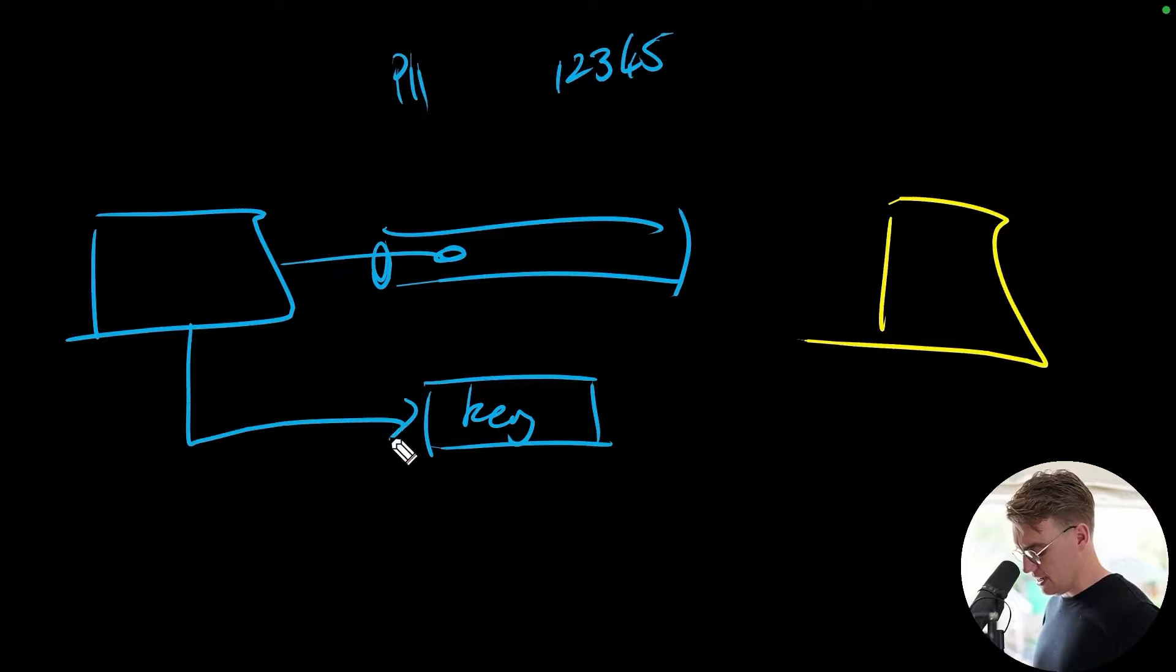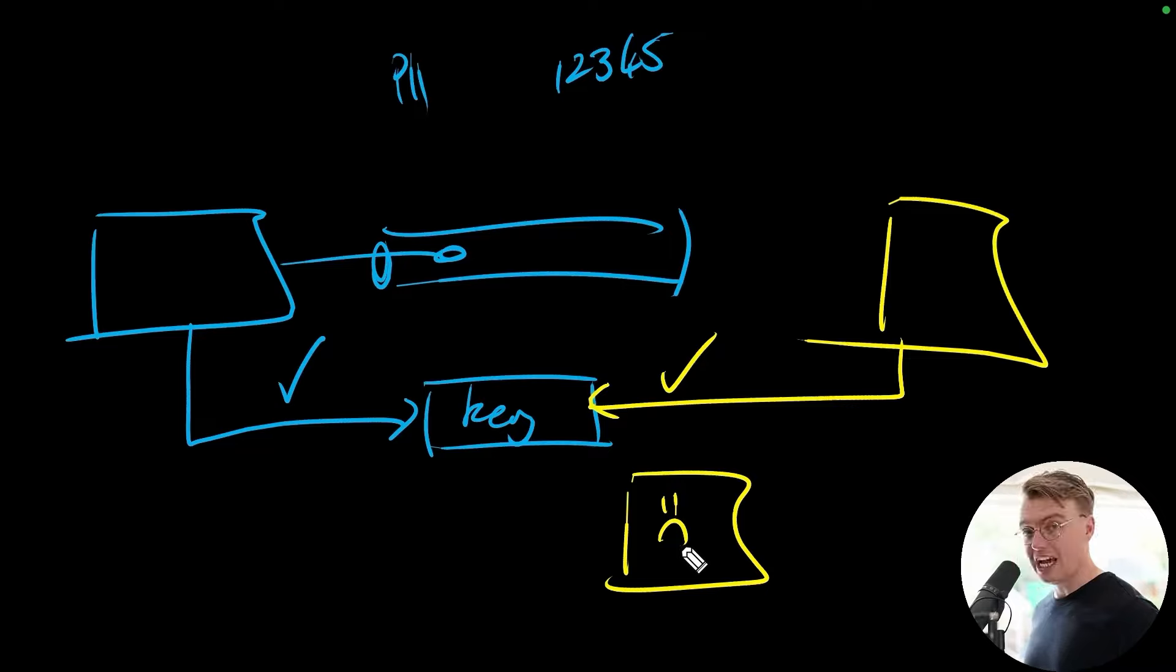Your producing service has access to the key to be able to encrypt the data. And then you only give specific downstream services access to the key to be able to decrypt the data. So this service that you want to allow access to the data, they have access to the key to be able to decrypt.